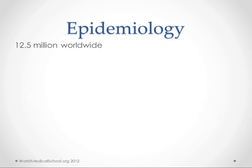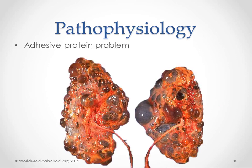Polycystic kidney disease is a disease that affects about 12.5 million people worldwide. It's a problem with an adhesive protein that is not just found in the kidneys, and we'll see some extra-renal manifestations of it too. But it most dramatically affects the kidneys and we get these cysts on the kidneys. In this picture you can see the kidney is completely covered. It is a presence of multiple cysts bilaterally on the kidneys.